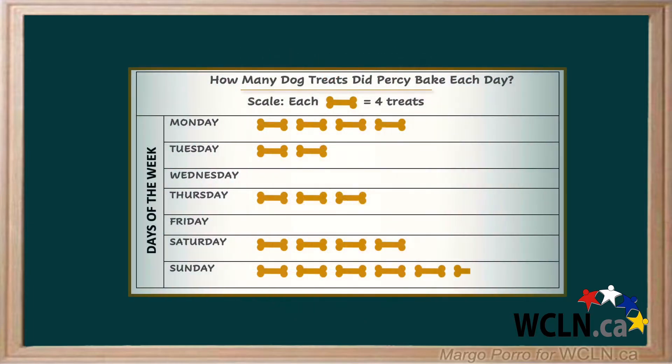Take a look. Percy makes dog treats every day to give to a dog rescue and shelter place. This pictograph shows how many dog treats he baked each day in the past week. You can easily see that on Sunday, the largest number of treats were baked.